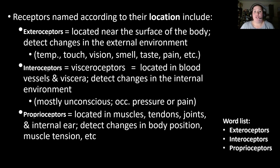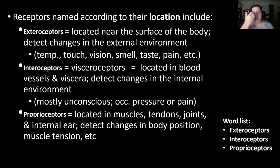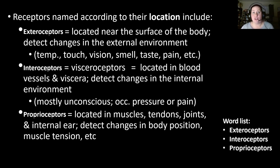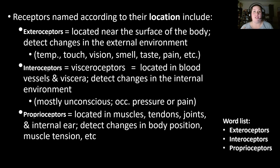Receptors are also named according to their location. Exteroceptors are located near the surface of the body and detect changes in the external environment like touch, temperature, vision, smell, taste, and pain — these are what we normally think of as the five senses. Interoceptors, also known as visceral receptors, are located inside, such as in blood vessels and internal organs, and detect changes like blood pressure, chemical levels, and stretch — like a full bladder or stomach. Most of these are perceived unconsciously unless they involve pressure or pain.